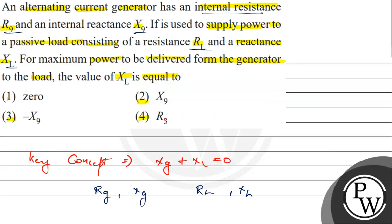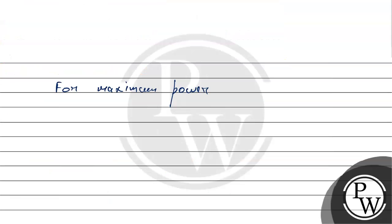For maximum power to be delivered from the generator, the total reactance should be zero.